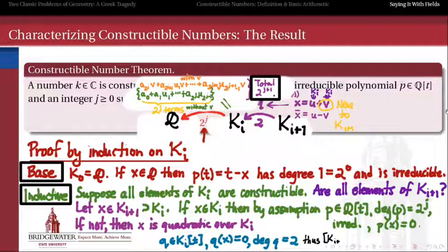And therefore, what we would say as algebraists is that the degree of ki plus 1 over the rational field is equal to 2 to the power j plus 1, which implies that there is a polynomial of degree 2 to the j plus 1, of which the elements in ki plus 1 are all roots, which is what we were trying to prove. So by induction, we see that the constructible number theorem holds some water.